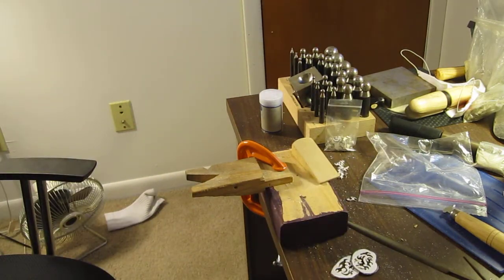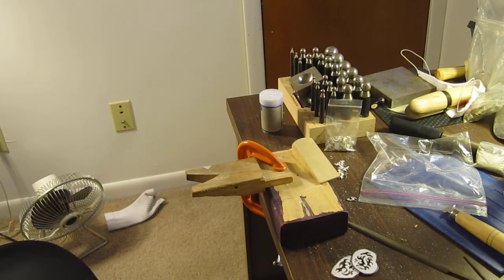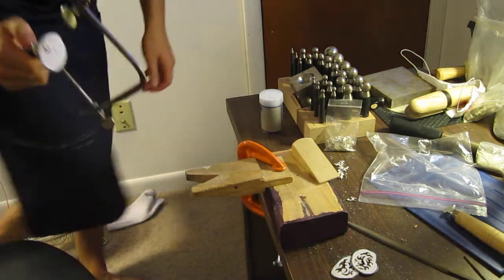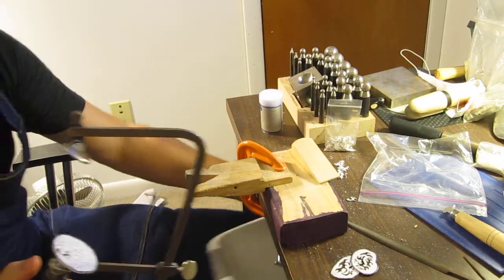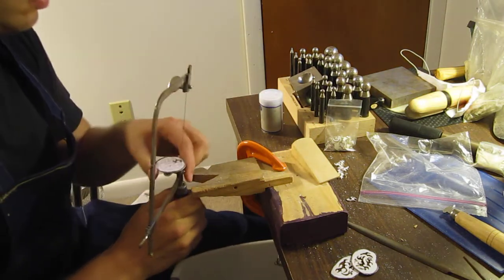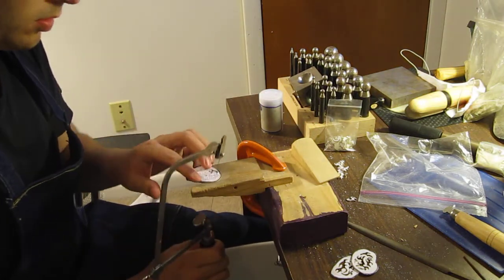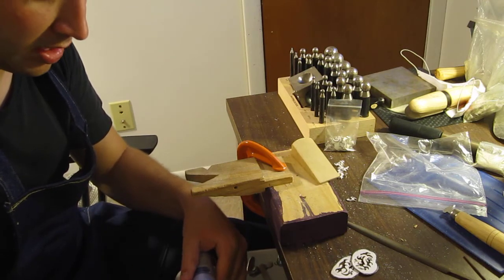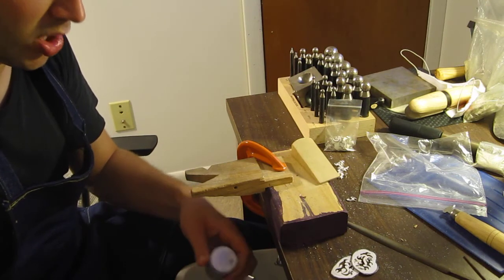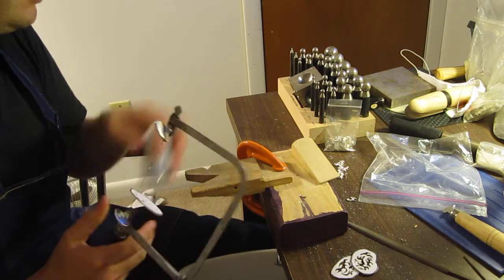Now the first step with this is once again running the saw blade through and then lining it up on your bench pan. So lube up your saw blade like always. This will make it less likely to break a saw blade and it will also be easier to saw.